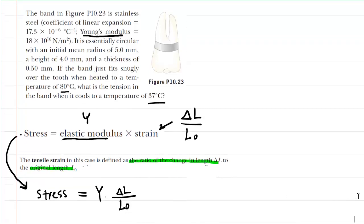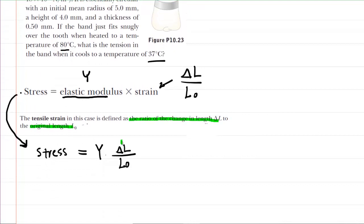We know this is the elastic modulus Y multiplied by the change in length divided by the original length. Now, in this chapter, we have learned that the change in length can be calculated based on a temperature change. As things get warmer, they expand, and as they cool down, they contract. We can calculate that change in length based on a change in temperature. It is given by a coefficient of linear expansion multiplied by the original length multiplied by the change in temperature.